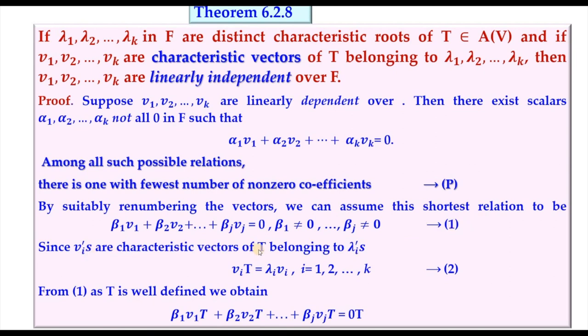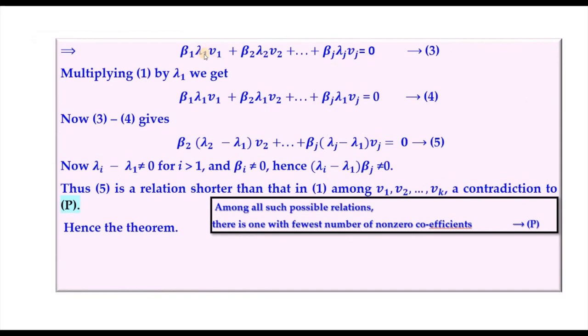Since each vᵢ is a characteristic vector belonging to λᵢ, we have vᵢT = λᵢvᵢ (equation 2). Applying T to both sides of equation 1, using linearity of T and equation 2, gives a new relation (equation 3). Multiplying equation 1 by λ₁ gives equation 4. Subtracting (3 minus 4) yields a shorter relation with each coefficient nonzero, since the λᵢ are distinct.